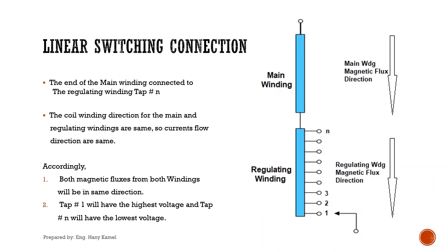We will start with linear switching connection. The end of the main winding is connected to the regulating winding at tap number N. The coil winding direction for the main and regulating windings are the same, so the current flow directions are the same. Accordingly, both magnetic fluxes from both windings will be in the same direction. Tap number 1 will have the highest voltage, and tap number N will have the lowest voltage.